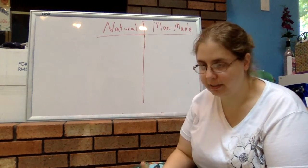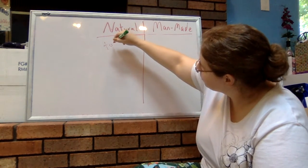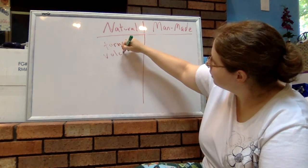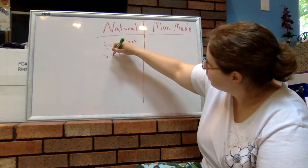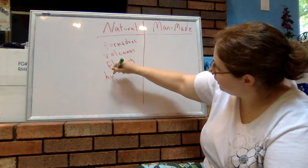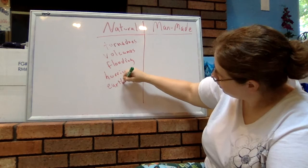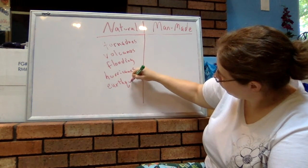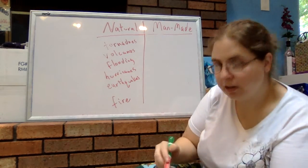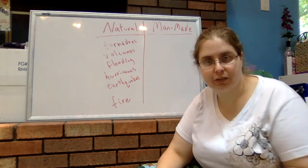Natural is exactly what you would think. It could be things like tornadoes, volcanoes, flooding, hurricanes, earthquakes, and fire like wildfire, so long as it's caused by lightning or something like that.